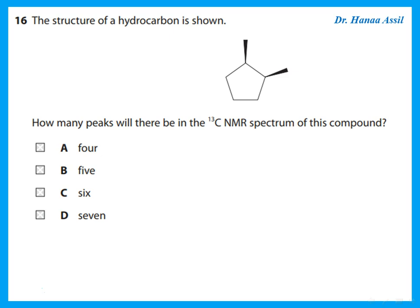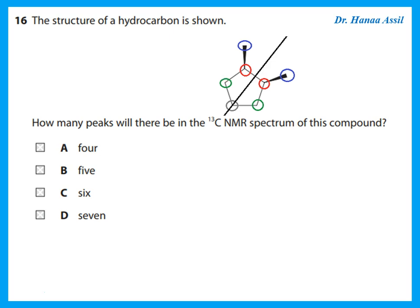The structure of a hydrocarbon is shown. How many peaks will there be in the carbon-13 NMR? The number of peaks depends on the number of different carbon environments. Due to the molecule's symmetry, the two methyl groups are equivalent, and the two carbons attached to them are also equivalent. There are a total of four different carbon environments, giving four peaks in the carbon-13 NMR.